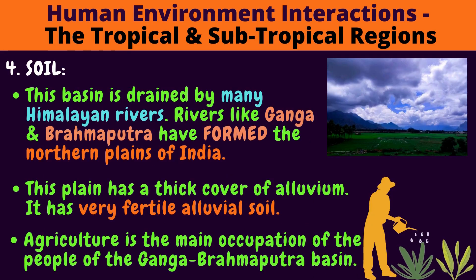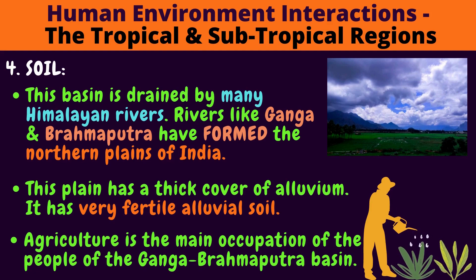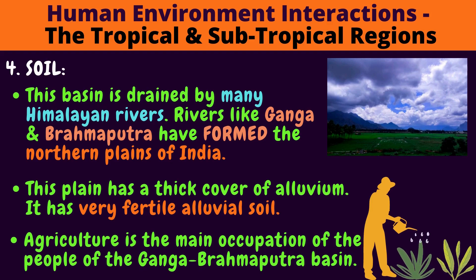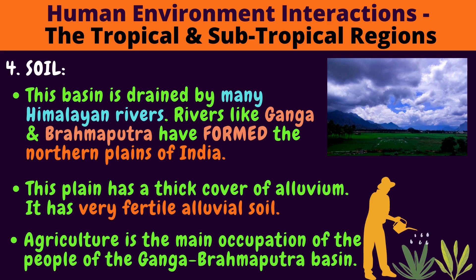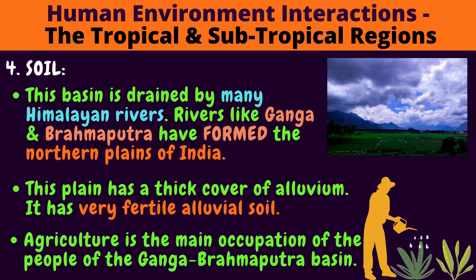Soil: This basin is drained by many Himalayan rivers. Rivers like Ganga and Brahmaputra have formed the northern plains of India. This plain has a thick cover of alluvium and very fertile alluvial soil. Agriculture is the main occupation of the people of the Ganga Brahmaputra Basin. Can you see a farmer there? He's watering the plants.